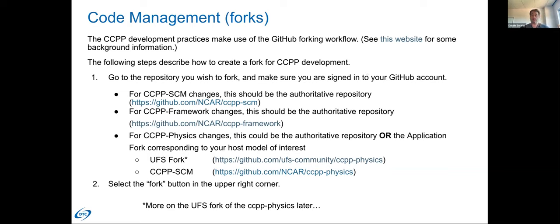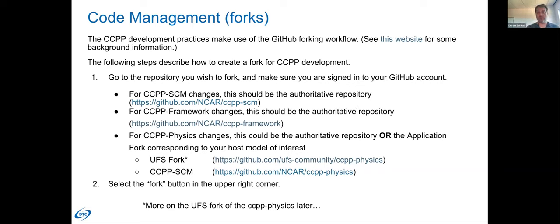How this works is there is an authoritative repository that you want to contribute to. The first step as a developer is to make a forked copy of it, so that you have a home place for your development work to live while you develop it. The idea is that development happens externally and then contributions come into the authoritative repository when they are ready.